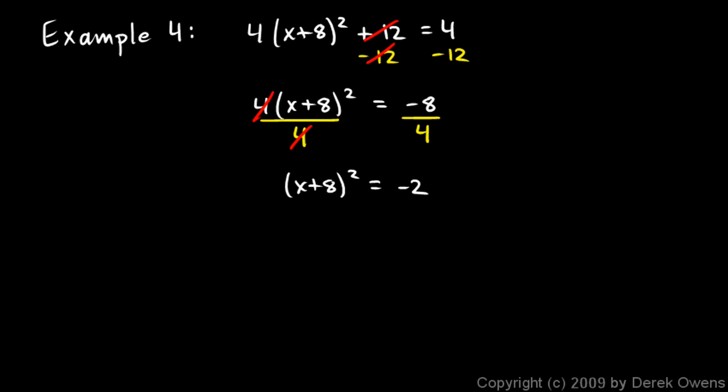And if I try to square root both sides, I get a problem. Square root the left and square root the right. Well, square root the left, I just get x plus 8, because this square root and the squared cancel each other out. So I have x plus 8 equals the square root of negative 2, and I can't do that. I can't do the square root of a negative number, not yet at least.